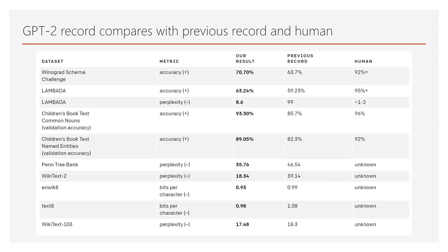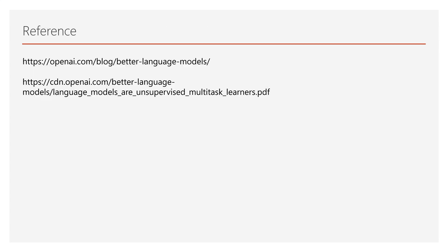This table should make it easier to understand how GPT-2, which is even a zero-shot learning model, is great on multiple NLP tasks, has replaced previous records, and is approaching human performance. Thanks for watching. Here are the references I summarized. I hope this video helped you understand GPT-2, and I will see you in the next video.